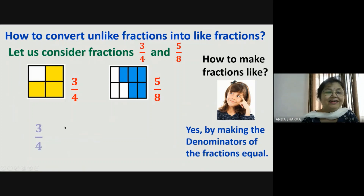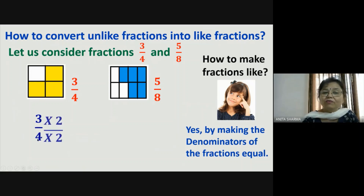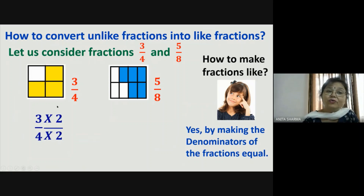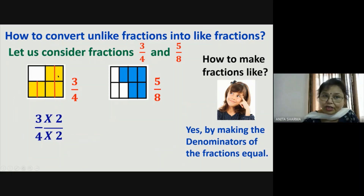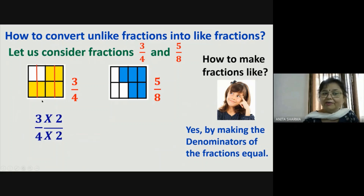To make three-fourth and five-eighth like fractions, we need to convert the denominator four into eight. We can multiply four by two to get eight. So we divide each of the four parts into two smaller parts. The three shaded parts are now converted into six parts, and the four total parts are converted into eight. So three-fourth becomes six-eighth when we multiply both numerator and denominator by two.